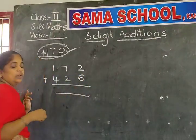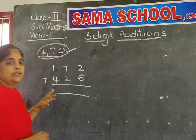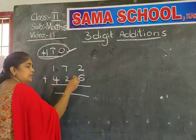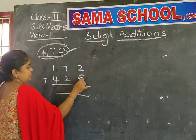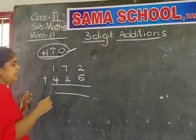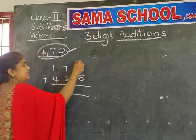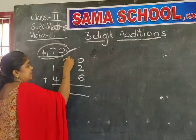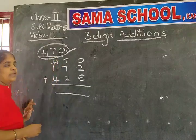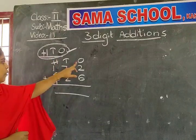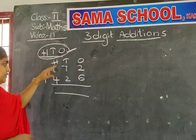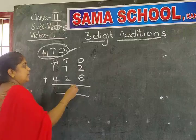One hundred and seventy-two plus four hundred and twenty-six. How many numbers I wrote here? One, two, three. The second number also has three digits: one, two, three. First, write the place values — ones, tens, and hundreds.